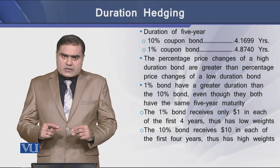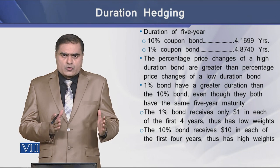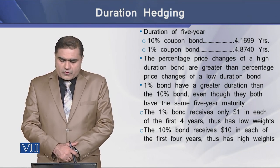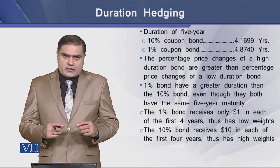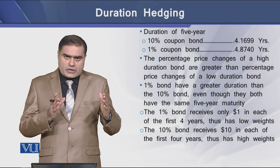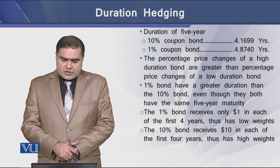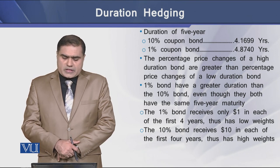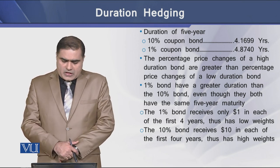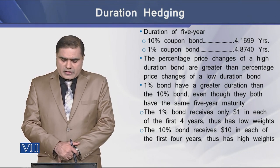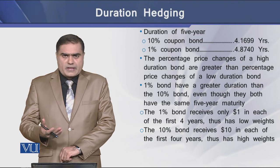Using this model, we can also determine the duration of a 1% coupon bond. For the 1% coupon bond, the duration is 4.8740 years. So we have 2 different duration periods for 2 different coupon bonds having the same 5-year maturity. We see that the percentage price changes of a higher duration bond are greater than those of a lower duration bond, meaning the 1% bond has greater duration than the 10% bond, even though both have the same 5-year maturity.